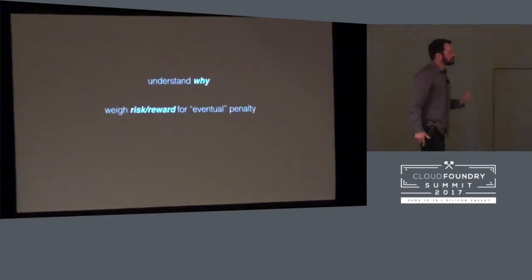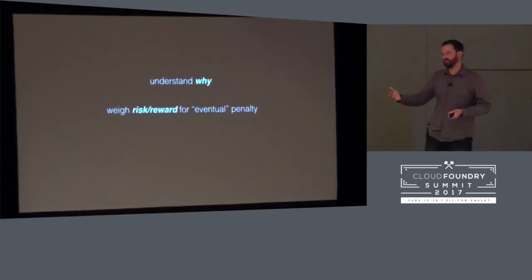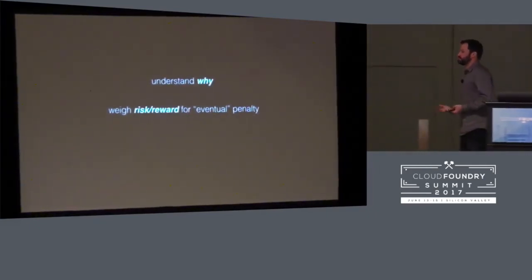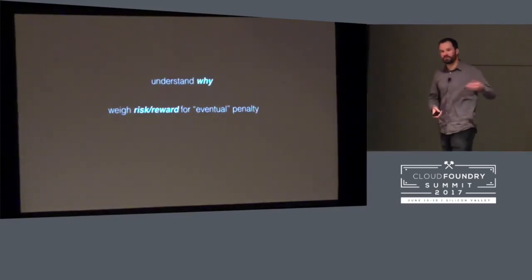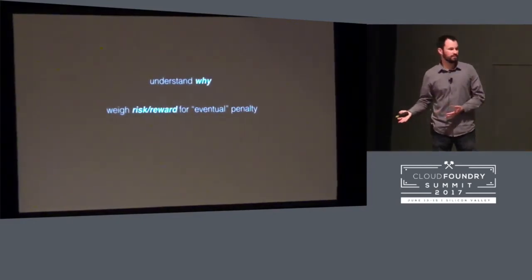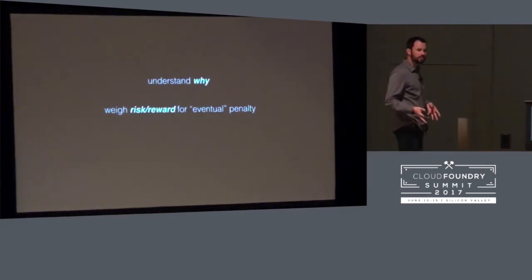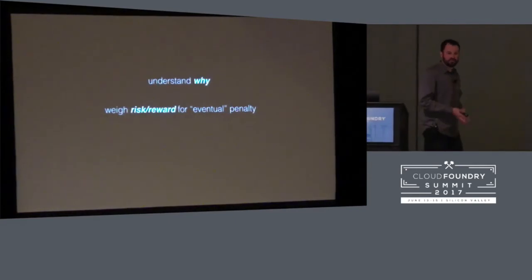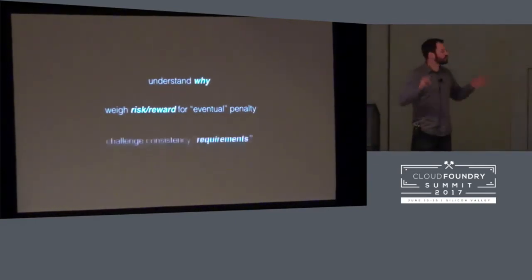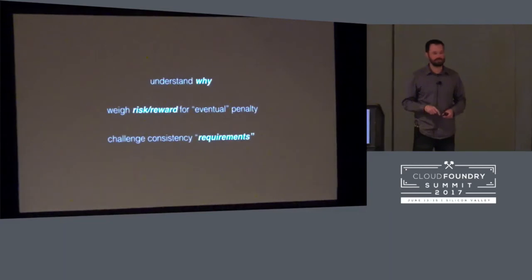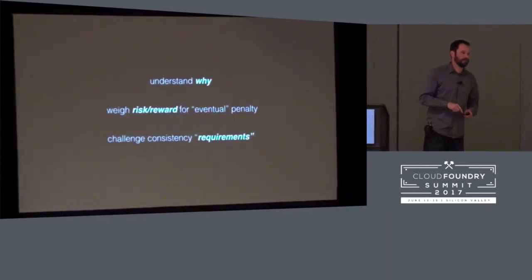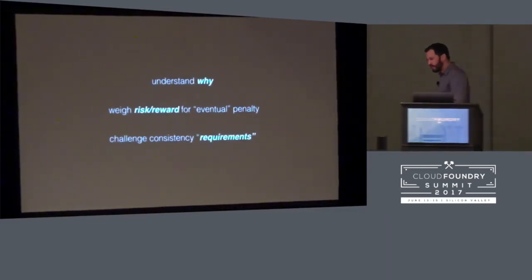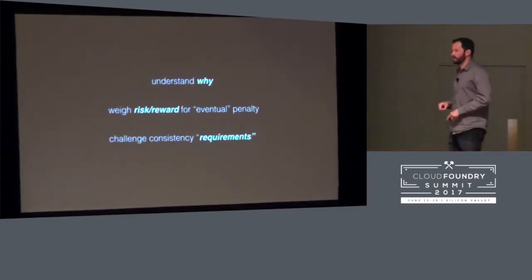The second thing is weigh that risk-reward for the eventual consistency penalty. If your apps can be eventually consistent — like in financial services — your job becomes so much easier. If you can introduce caching and they have to be consistent, your job becomes so much easier. It's a really hard problem if you don't, or if you're told that consistency is a requirement. In most cases it's not a requirement, and you need to push back and challenge that requirement.